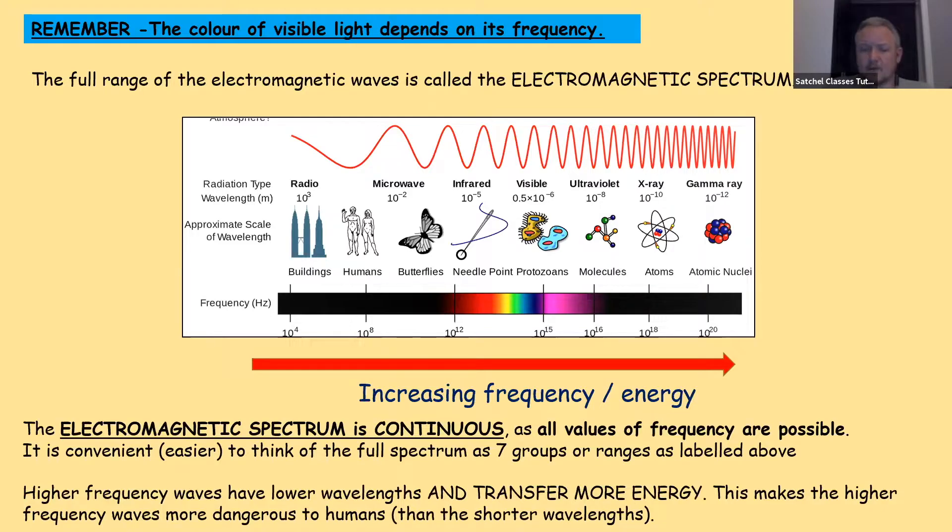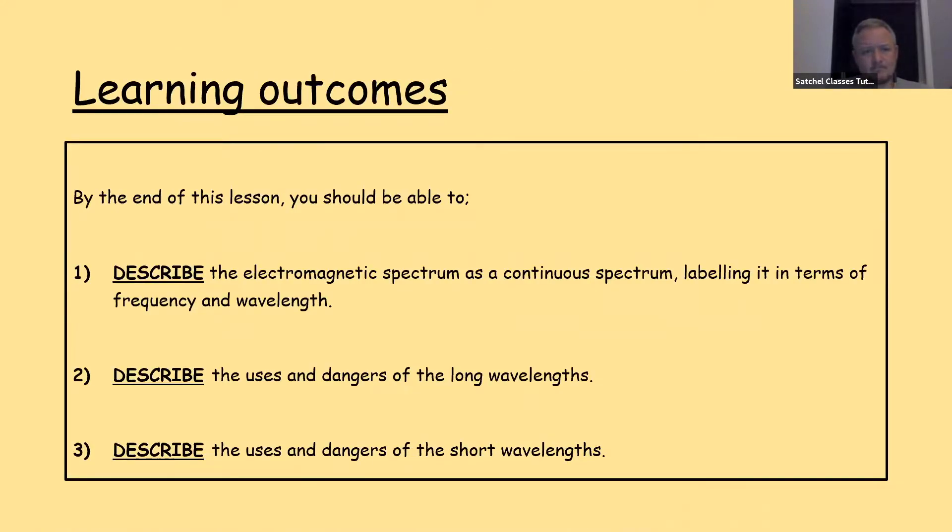Higher frequency waves have lower wavelengths, and that means they transfer more energy because there's more waves per second and each wave delivers energy. This makes the higher frequency waves more dangerous to humans than the shorter wavelengths. So that's our first outcome, describe the electromagnetic spectrum as a continuous spectrum, labeling it in terms of frequency and wavelength. Second one, describe the uses and dangers of long wavelengths. These two are kind of stories of science. What do we use them for, and why are they dangerous? Even if you don't understand, you should be able to quote both the use and the danger of each of these types of electromagnetic waves.